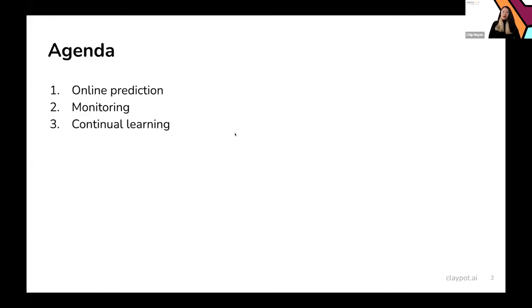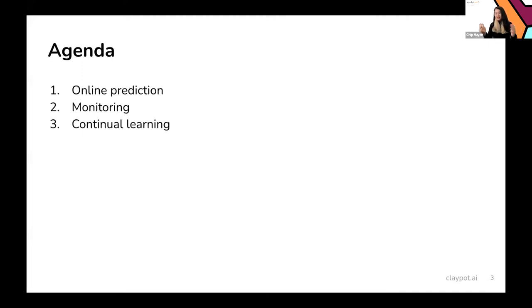In this talk, ideally we want to cover three topics: online predictions, monitoring, and continual learning. Because of limited time, I will try to cover the first two topics first and then go over continual learning if we have time. I find events like this a little hard to give talks to because I don't have a good sense of what people are interested in or what you've already seen.